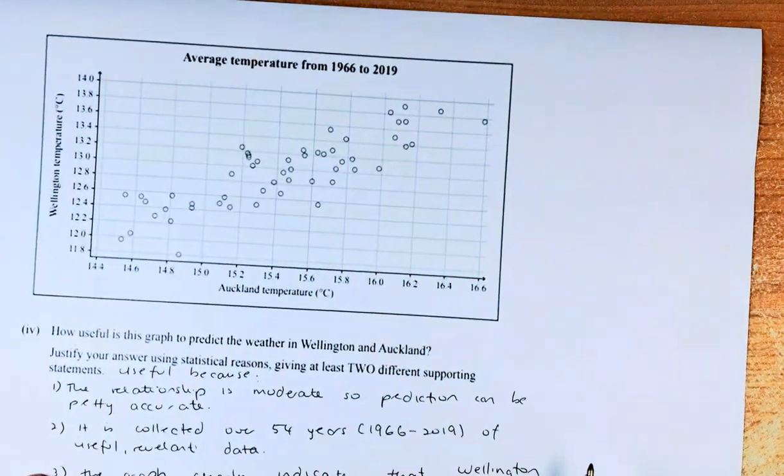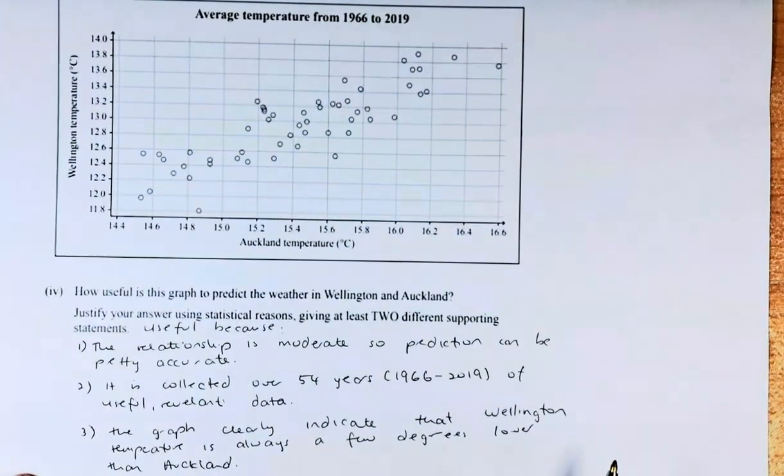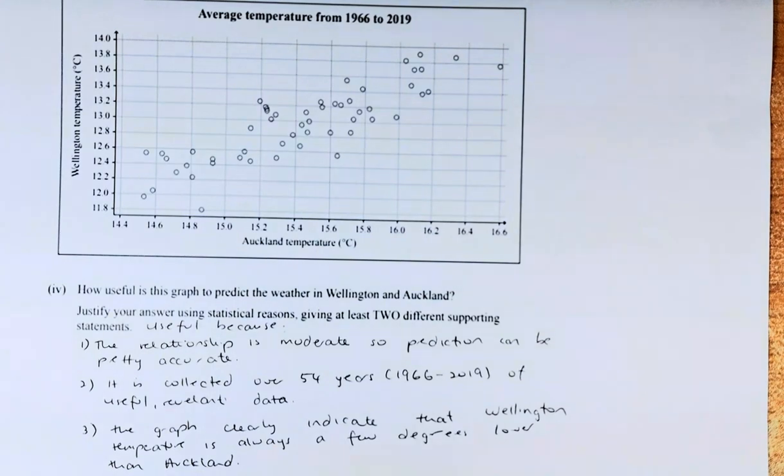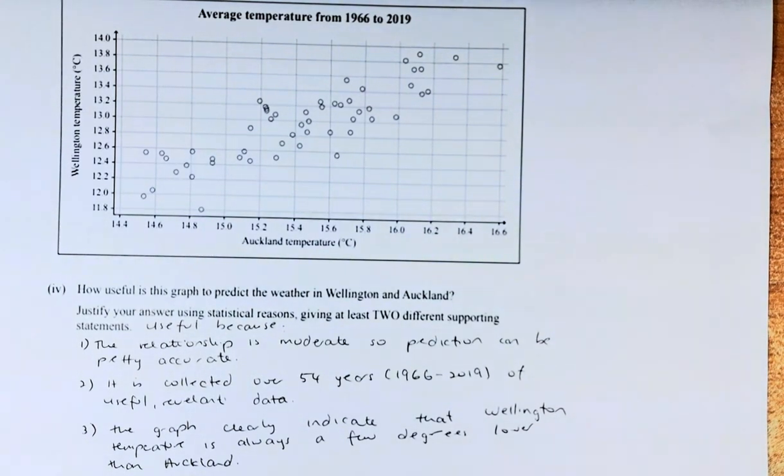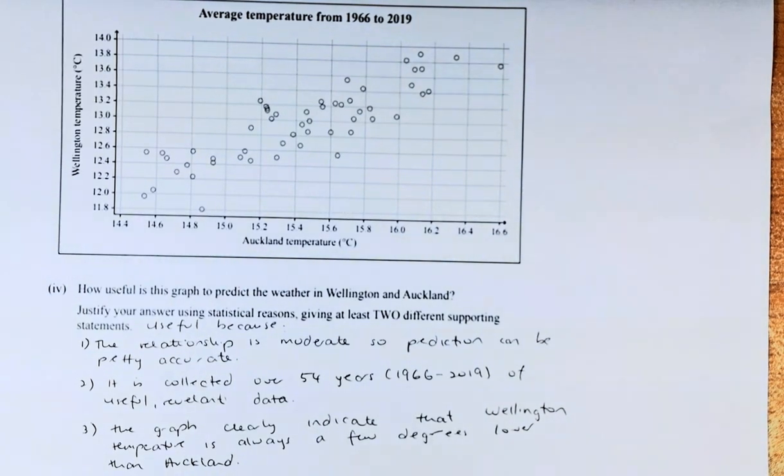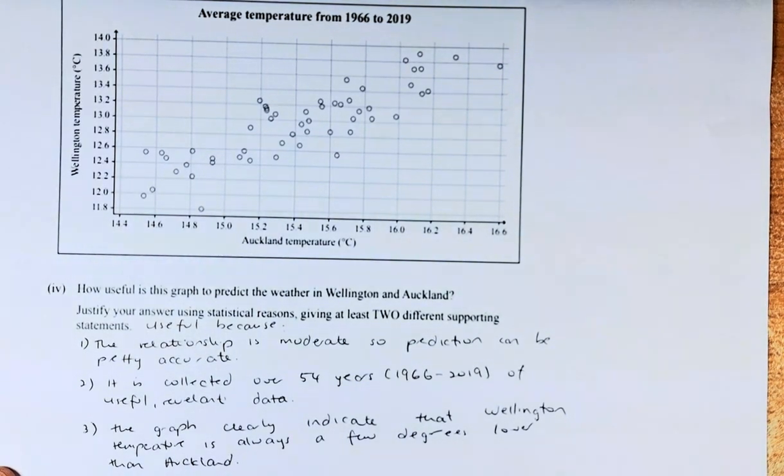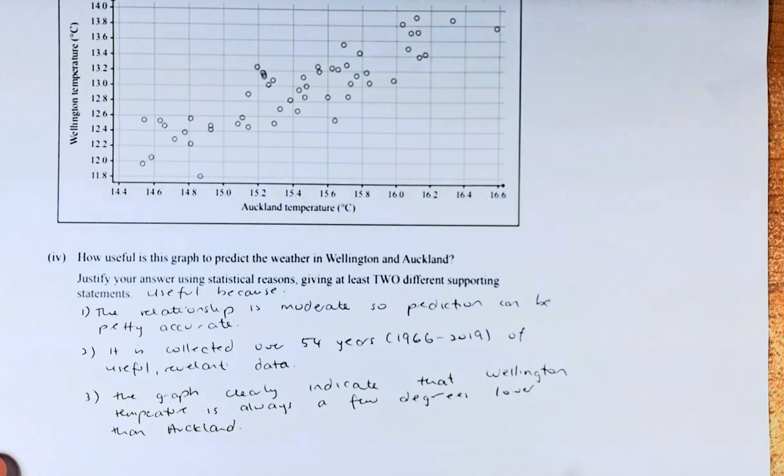Okay, last but not least, we are going to find out part 4. Part 4 sounds like this, okay? How useful is this graph to predict the weather in Wellington and Auckland? Justify your answer using statistical reason giving 2 supporting statements. So when they say at least 2, you must give me at least 2. I would suggest we give 3, so that if one of them is not acceptable, then you can have as a backup. Okay, so the answer is as follows.